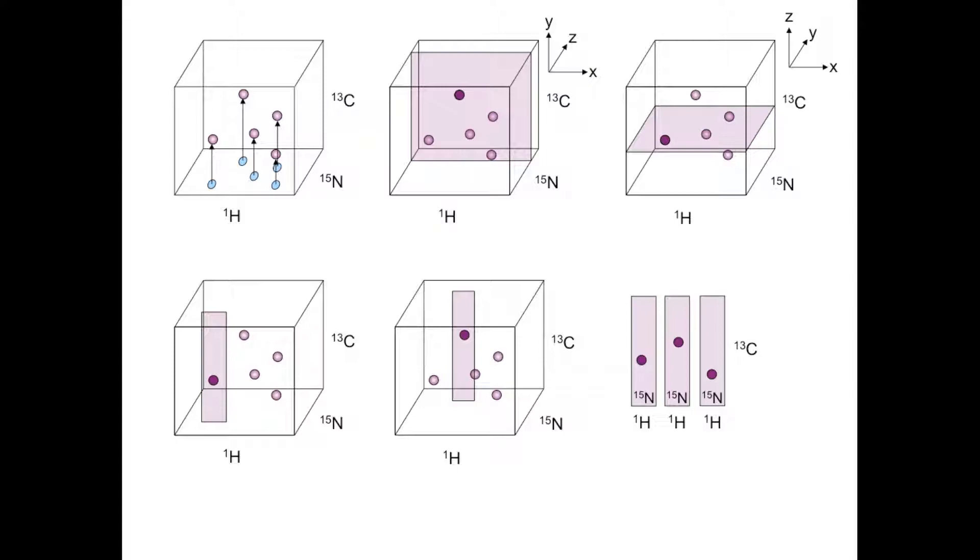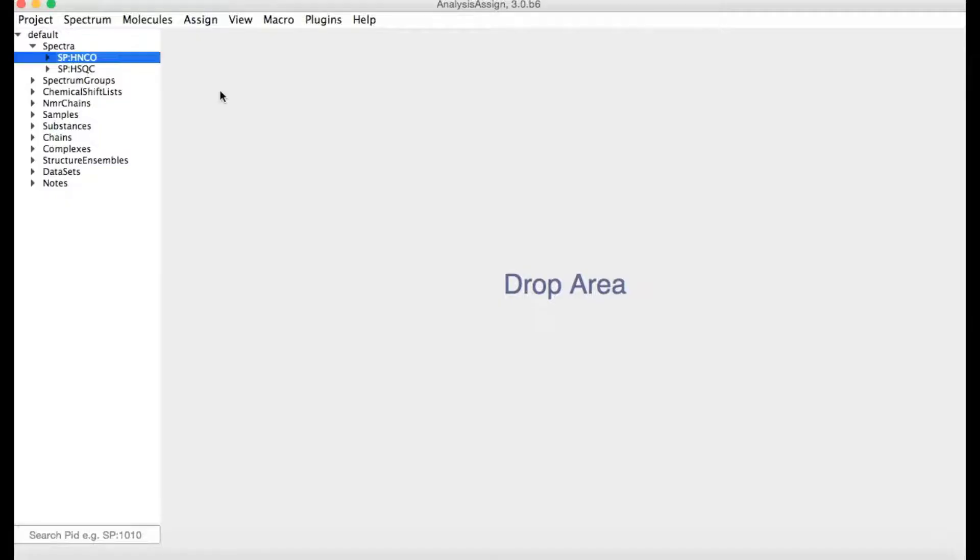So what does all this look like in Analysis? Here I have a project containing a 3D HNCO spectrum and a 2D HSQC. If I drag the HNCO into the drop area,